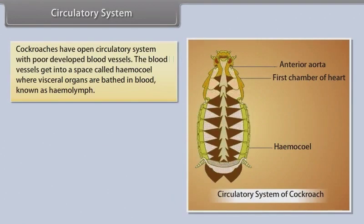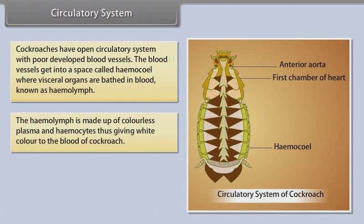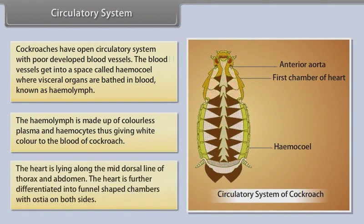Cockroaches have an open circulatory system with poorly developed blood vessels. Blood vessels open into a space called the haemocoele, where organs are bathed in blood known as haemolymph. The haemolymph is made up of colourless plasma and haemocytes, giving the blood of the cockroach a white colour. The heart lies along the mid-dorsal line of the thorax and abdomen and is differentiated into funnel-shaped chambers with ostia on both sides.